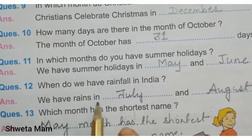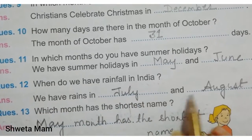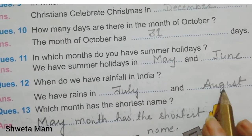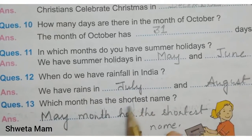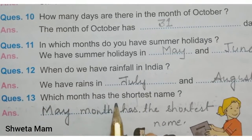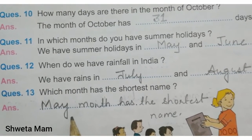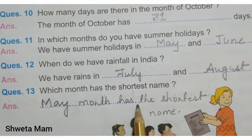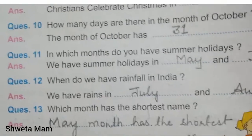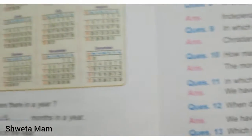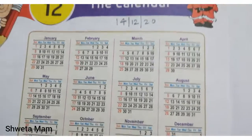When do we have rainfall in India? We have rains in July, J-U-L-Y, and August, A-U-G-U-S-T. Which month has the shortest name? May, M-A-Y. May has the shortest name. So class 1, this is your chapter 12, complete exercise.